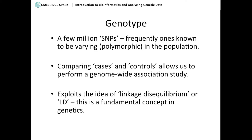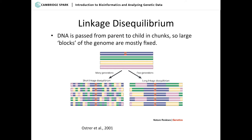I want to explain the idea of linkage disequilibrium, which is really important and actually what makes the genotype so powerful. The idea is that you inherit your DNA from your mother and father in big chunks — you're not getting a single site alternating from mom and dad. So over relatively short periods of time, you have big blocks of your genome that are identical to other people in the population, and you can use these to trace back lineages.